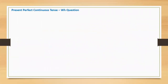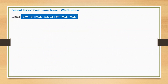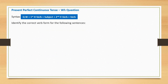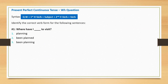Let's consider present perfect continuous WH questions. Syntax: it starts with a question word or phrase, followed by first helping verb, subject, second helping verb, and main verb. Sentence one: 'Where have I blank visit?' Option one: planning. Option two: been planned. Option three: been planning. Correct option: been planning. Full sentence: 'Where have I been planning to visit?'